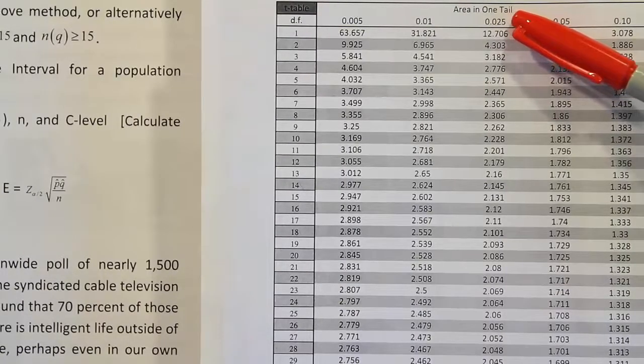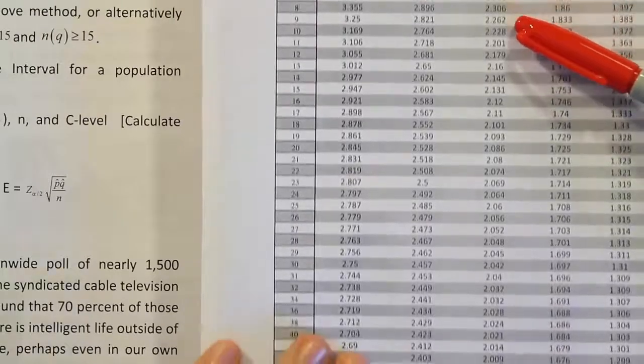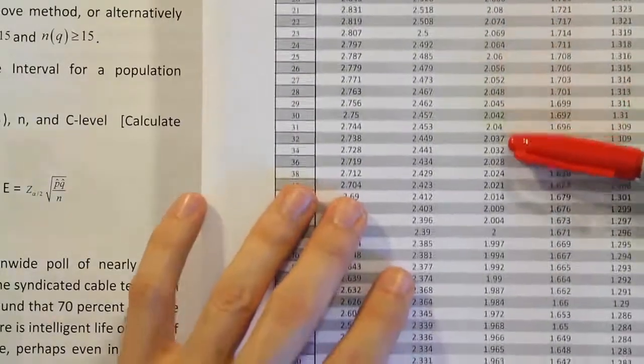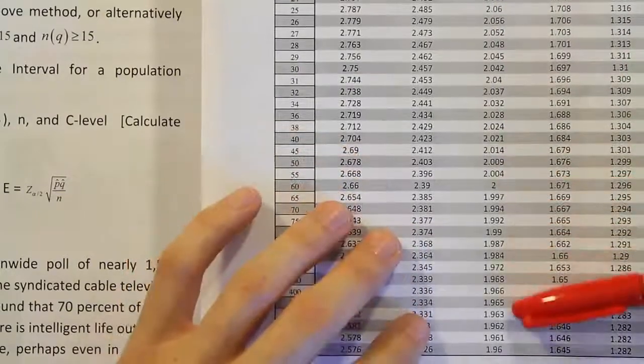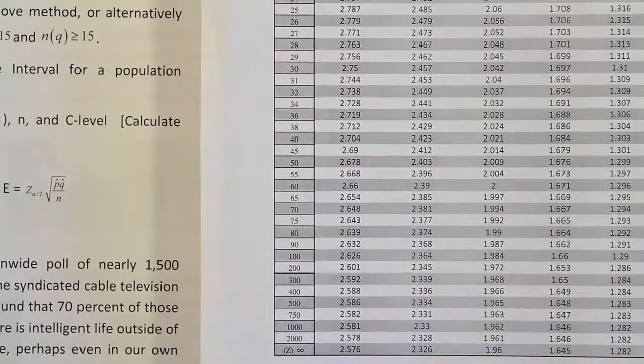And then from there, we're going to scroll down to the bottom since we're looking for a z score. So the very last entry in that column is going to be our answer. Scroll all the way down to the bottom until we see our answer is 1.960.